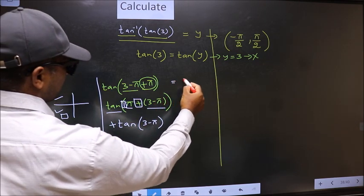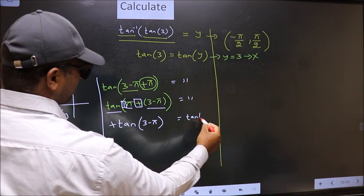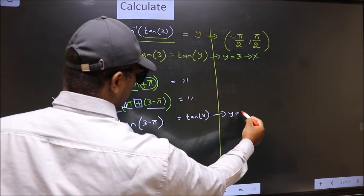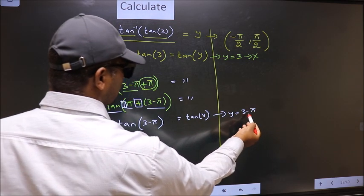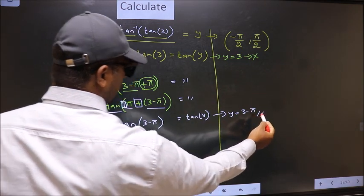On the other side, no change, equal to tan y. Now comparing both sides, we get y to be 3 minus pi. Does this lie in this interval? Yes. So this is our answer.